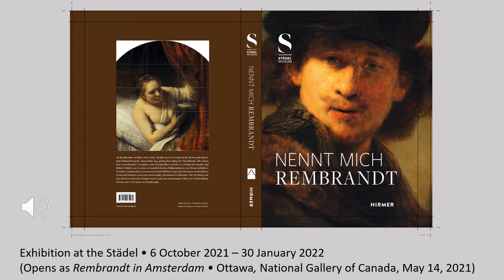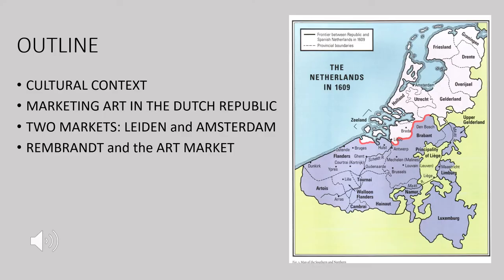I've had the privilege of working with Professor Zander and Dr. Schutt on an exhibition that will open at the Städel later this year. Some of what I will say today is based on research for this exhibition, but I'm also going to give you a more general introduction to how art was made and marketed in the Dutch Republic in the world of the artist Rembrandt van Rijn. There are four parts to this presentation: background about the Dutch Republic, the art market itself, a comparison of Leiden and Amsterdam, and Rembrandt's participation in the art market as an artist, collector, art dealer, and teacher.